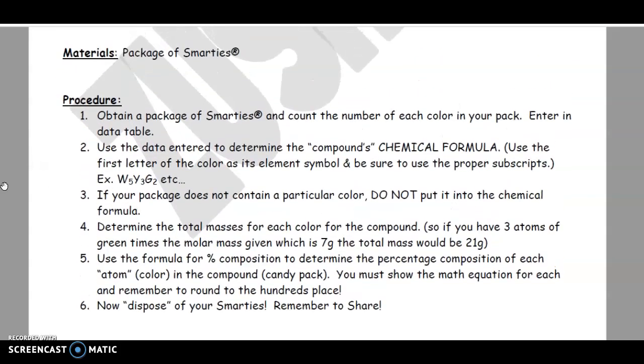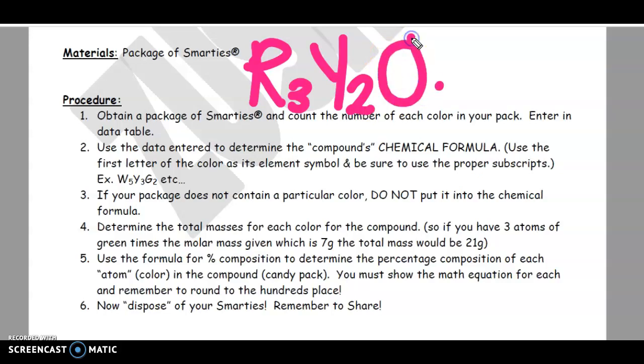So once you do that, you're going to determine the compound's chemical formula. You're going to use the first letter of the color as its element symbol, and we're going to consider the proper subscript. So let me explain to you what that means. Let's say we had three reds. It would be R3. Let's say we had two yellows. So it'd be Y2. Let's say we had three oranges. O3. And let's say that's all we have. Let's say we didn't have any whites, and we didn't have any greens. Remember, if we don't have any of the element, we don't write it. So if we don't have any other colors, it's simply not going to be written.